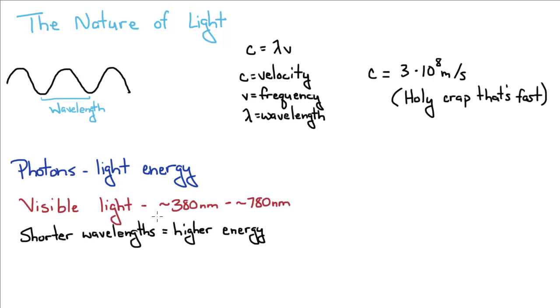So visible light has a wavelength of anywhere from 380 nanometers to 780 nanometers and the shorter the wavelength the higher the energy.